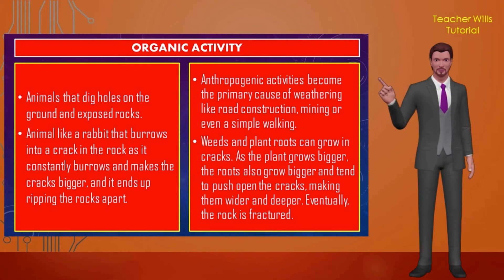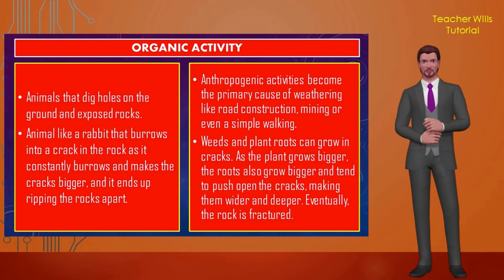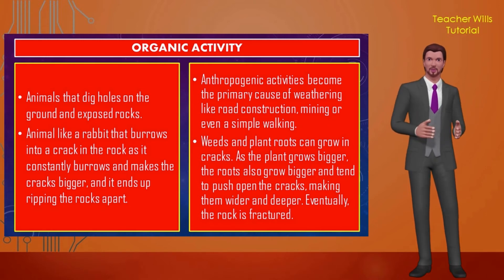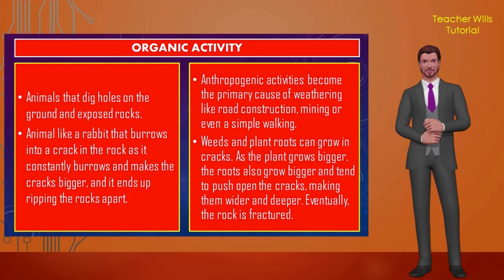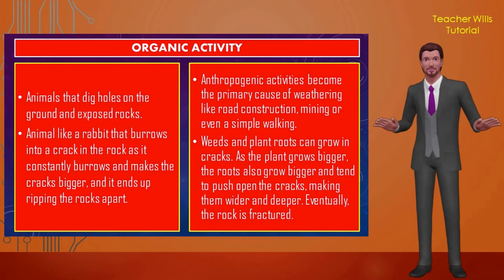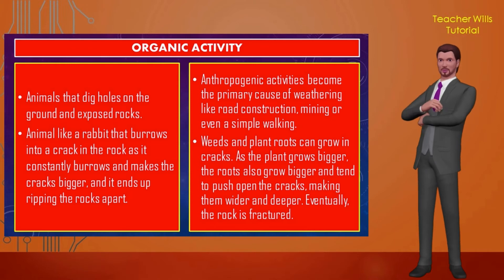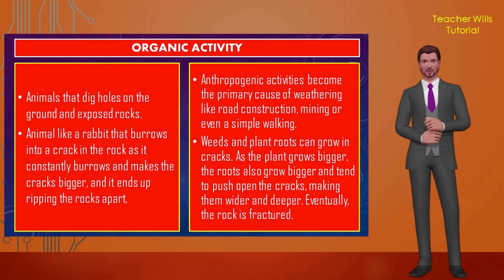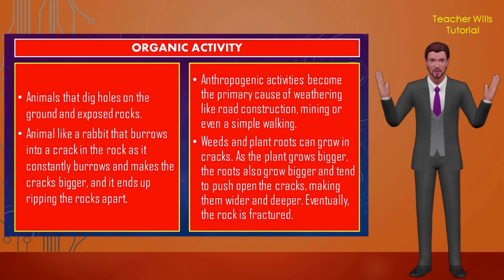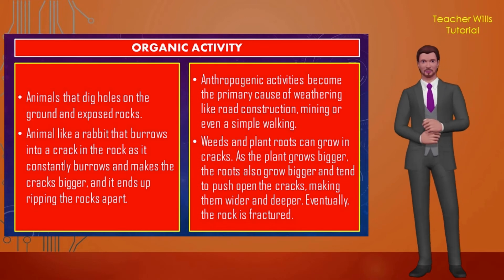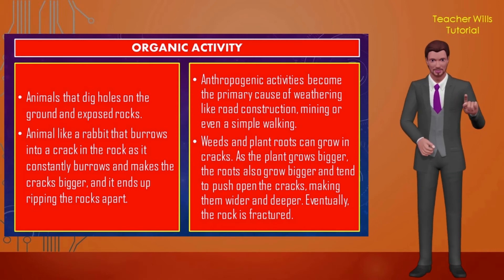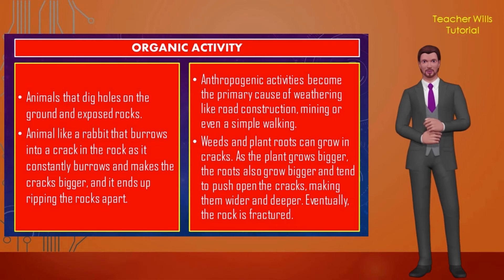Organic activity: animals and plants also take a heavy toll on rocks, causing them to wear away. For example, animals dig holes in the ground exposing rocks, or a rabbit burrowing into a crack in the rock can make the crack bigger, eventually ripping the rock apart. Anthropogenic activities — such as road construction, mining, or even simple walking — become primary causes of weathering. Weeds and plant roots grow in cracks, and as the plant grows bigger, the roots push open the cracks, making them wider and deeper, until the rock is fractured.